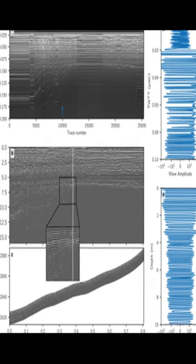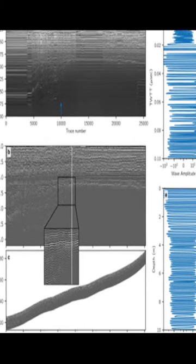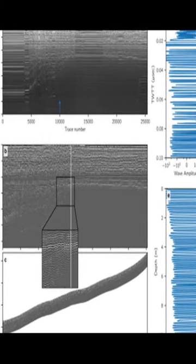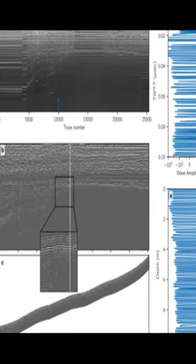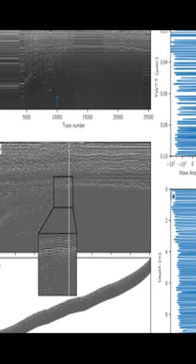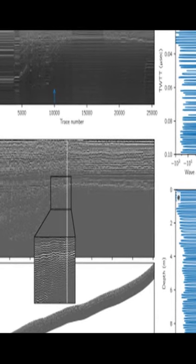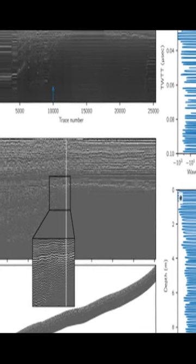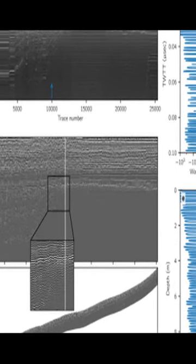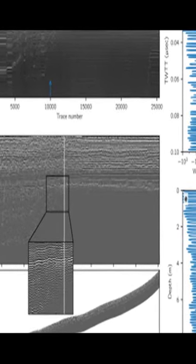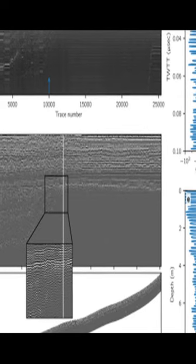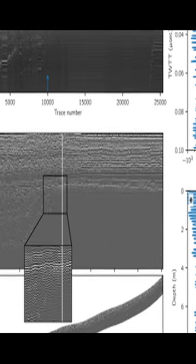ImpDAR is an open-source software package designed to process Impulse Radar Echo Sounding, IES, data. It provides a versatile toolkit for radar processing novices and specialists alike.